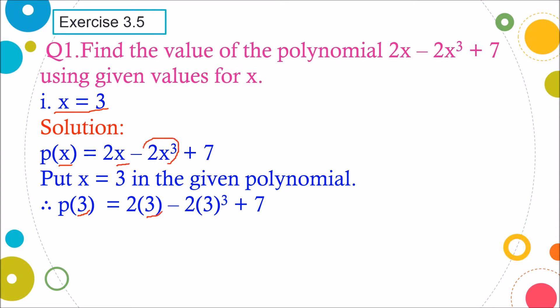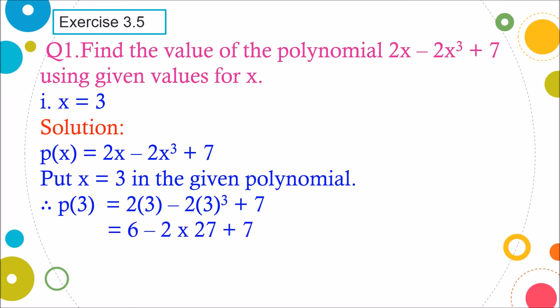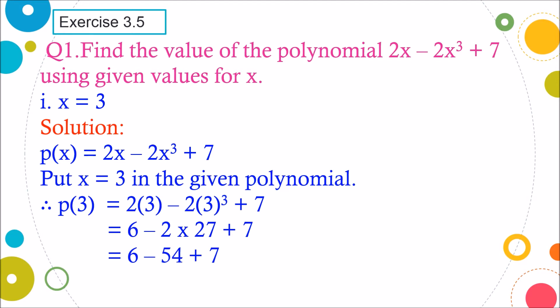We have 2 into 3, and here it's x raised to 3, so at the place of x I have written 3. After substituting the value of x in this equation, we need to simplify it further. We get 6 minus 2 into 27 plus 7. Here 2 into 3 gives 6, and 3 raised to 3 means 3 into 3 into 3, which gives us 27. So we get 6 minus 54 plus 7, since 2 into 27 is 54.